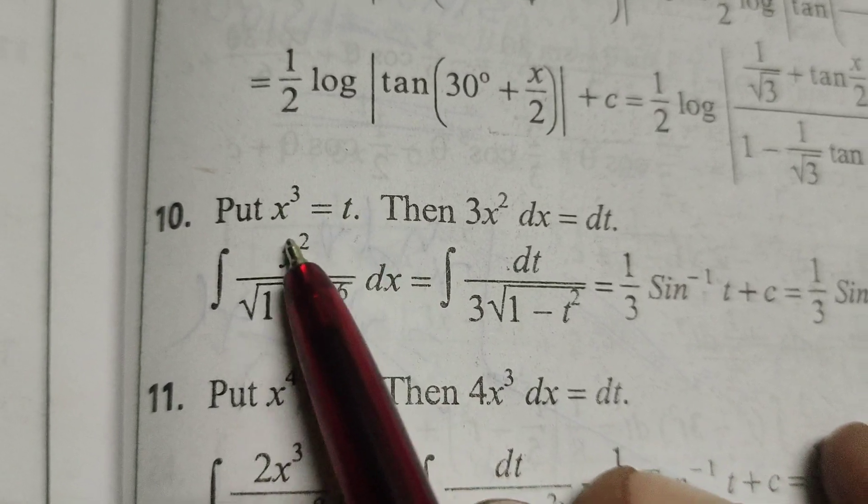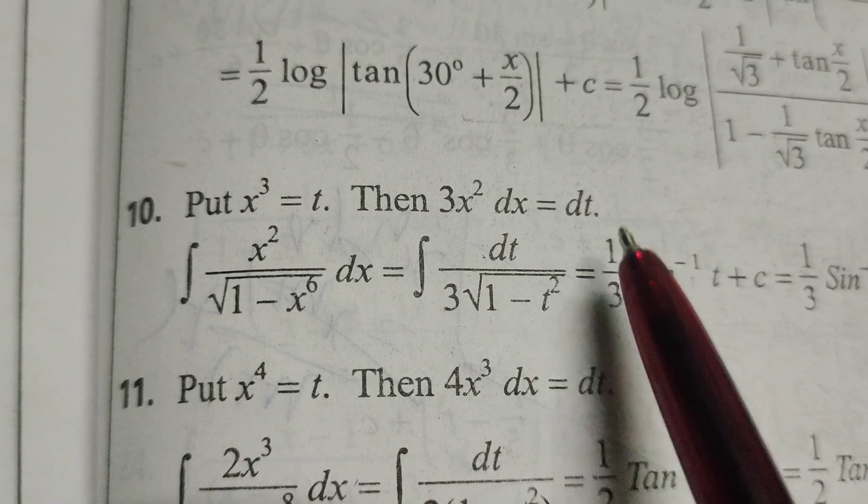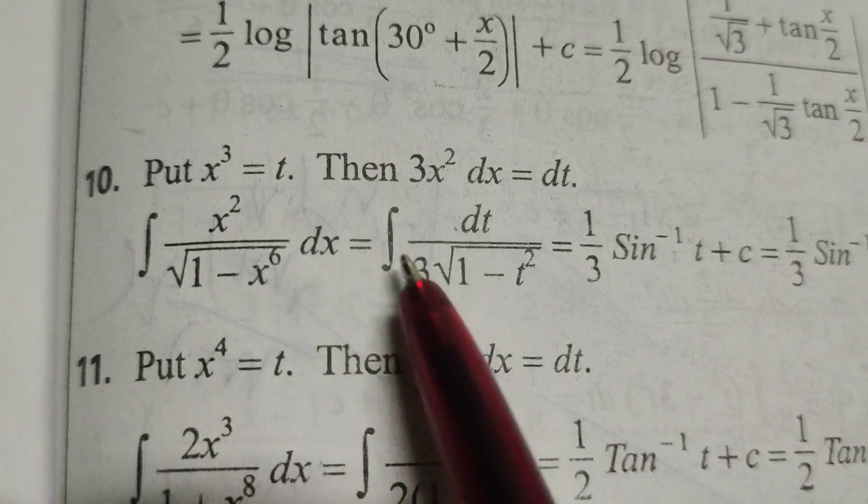Here suppose x cube equals to t, then differentiate this: 3x square dx equals to dt. Now substitute our substitutions in this integral.